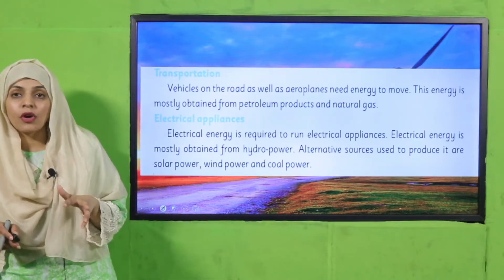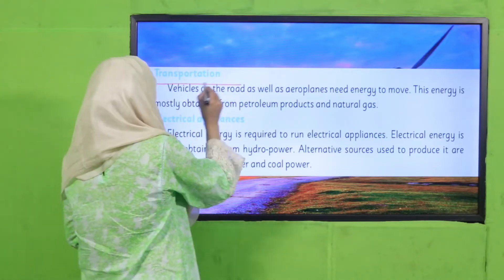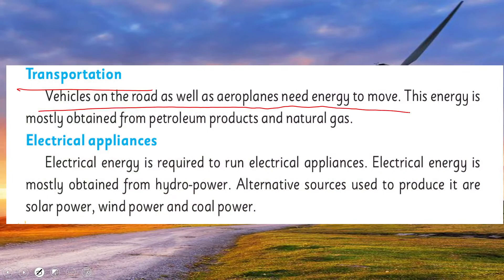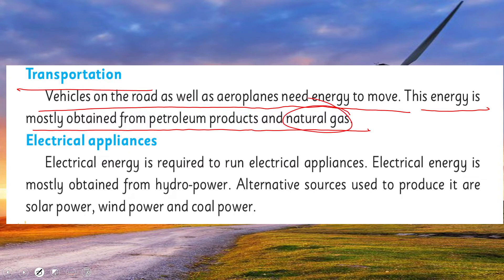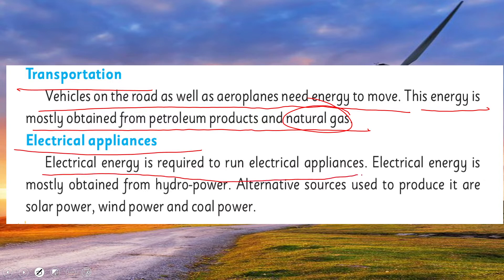Next is transportation. Vehicles on the road as well as aeroplanes need energy to move. This energy is mostly obtained from petroleum products and natural gas. To travel from one place to another you need transportation, and to move that transportation, energy is required, which comes mainly from petroleum and natural gas.